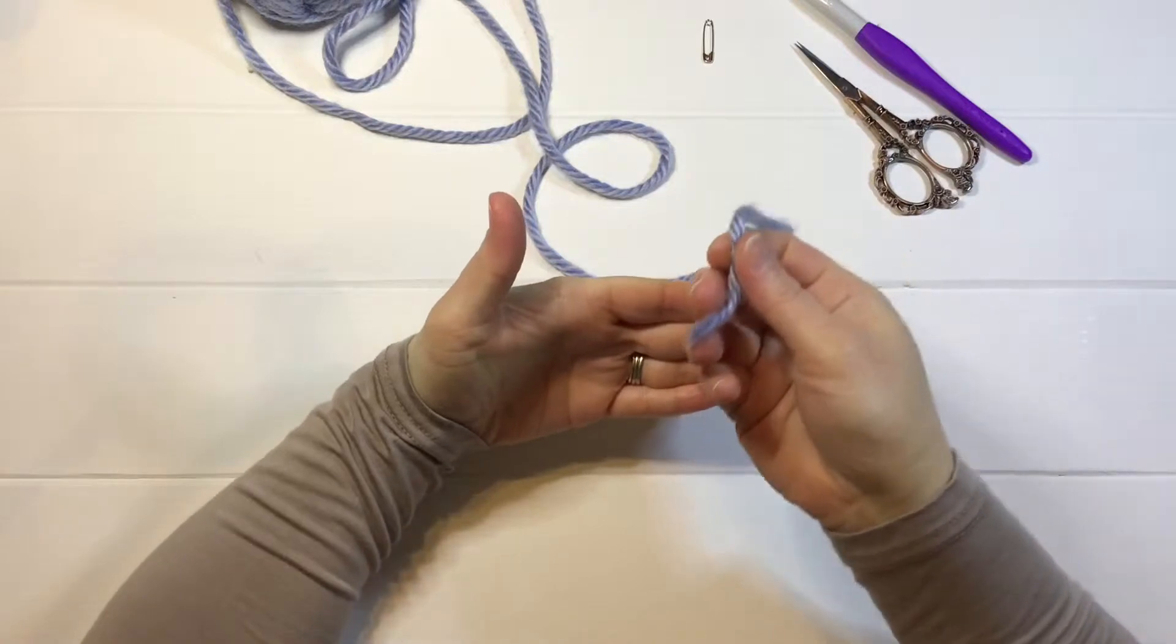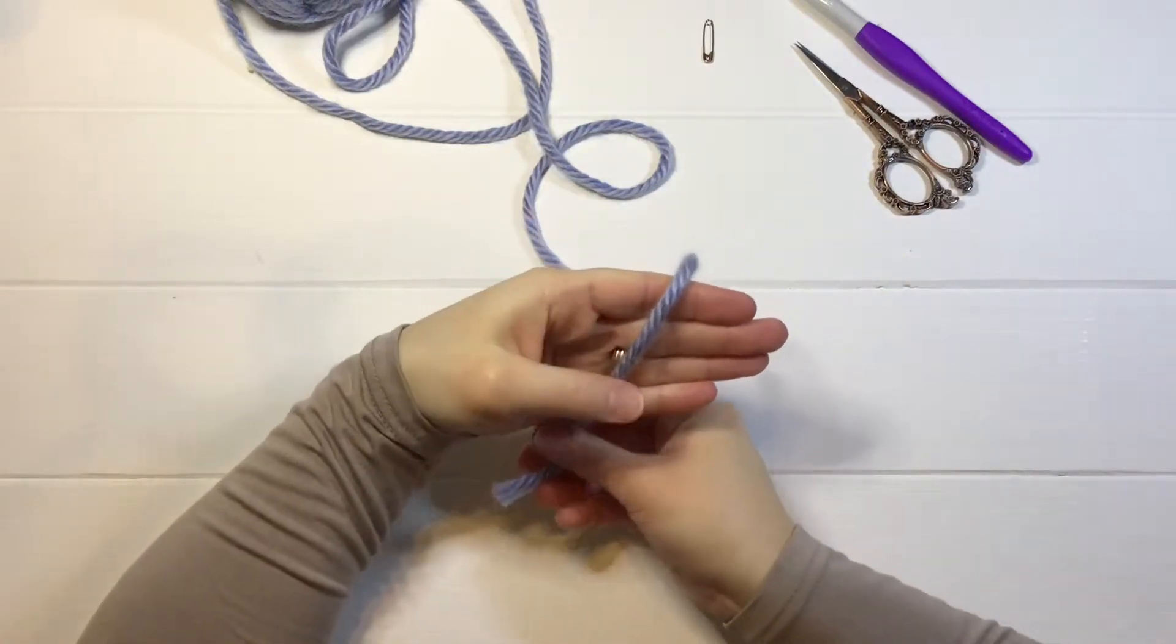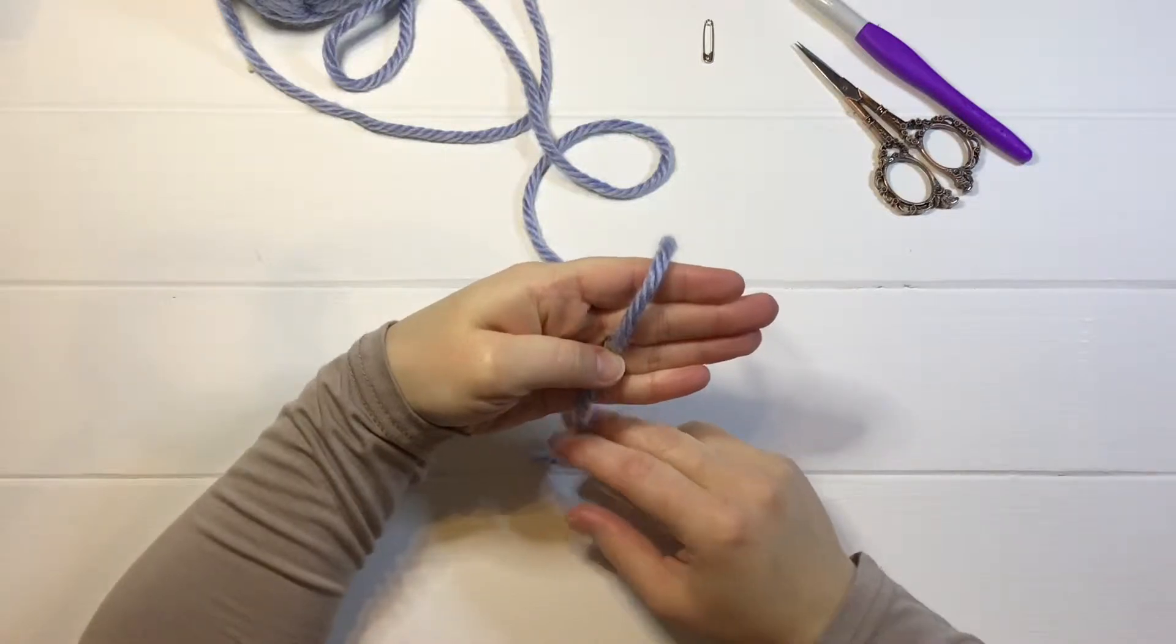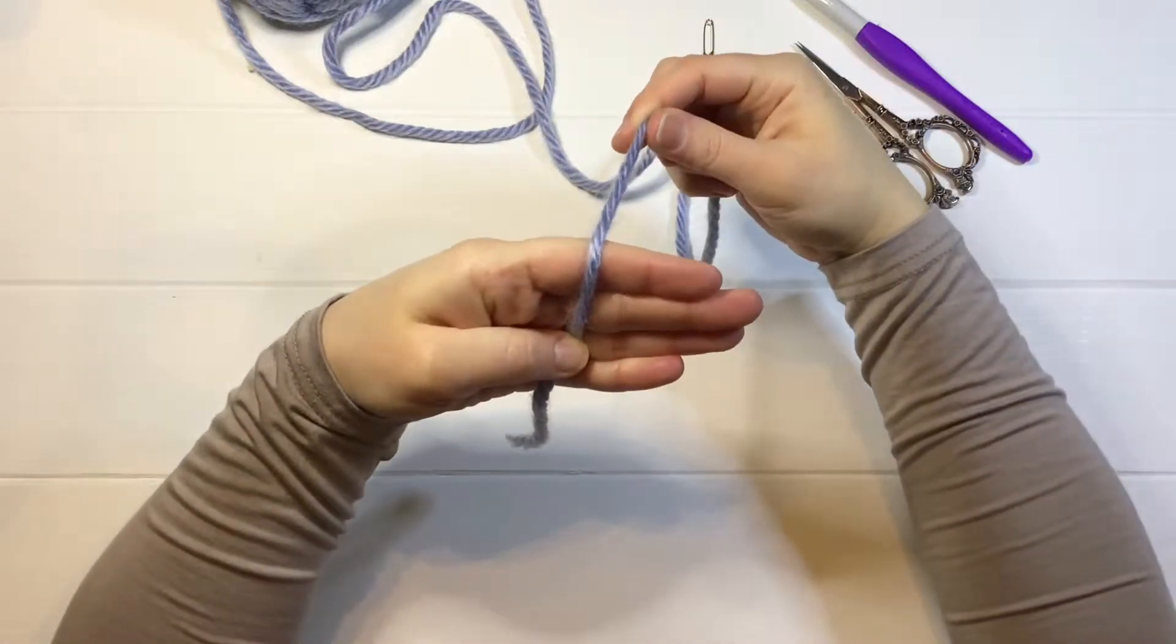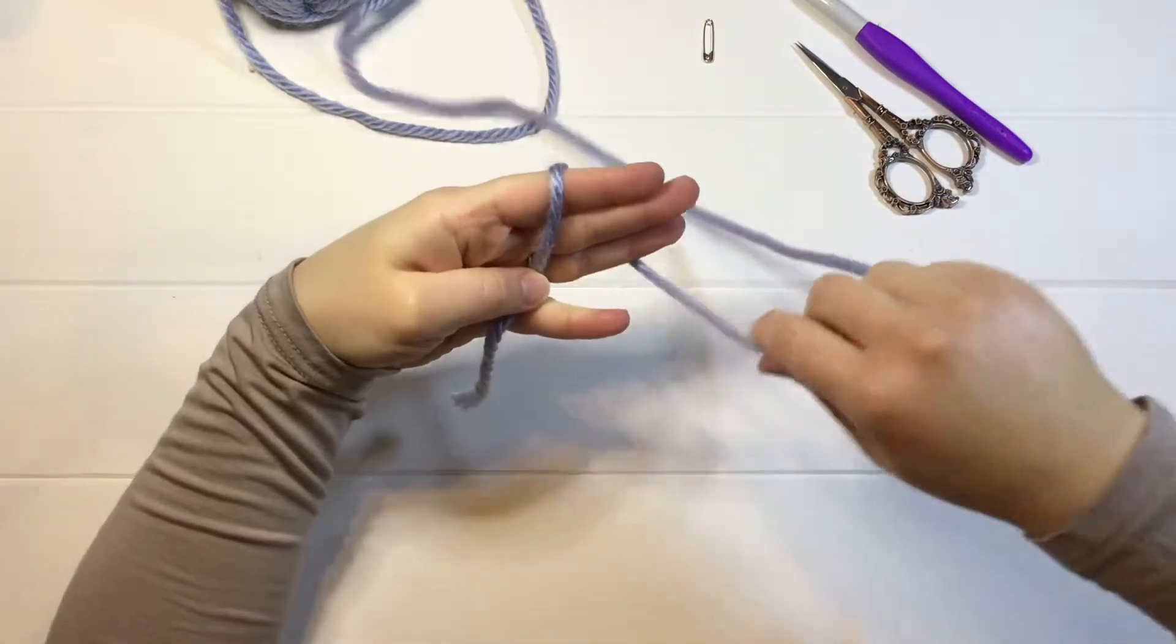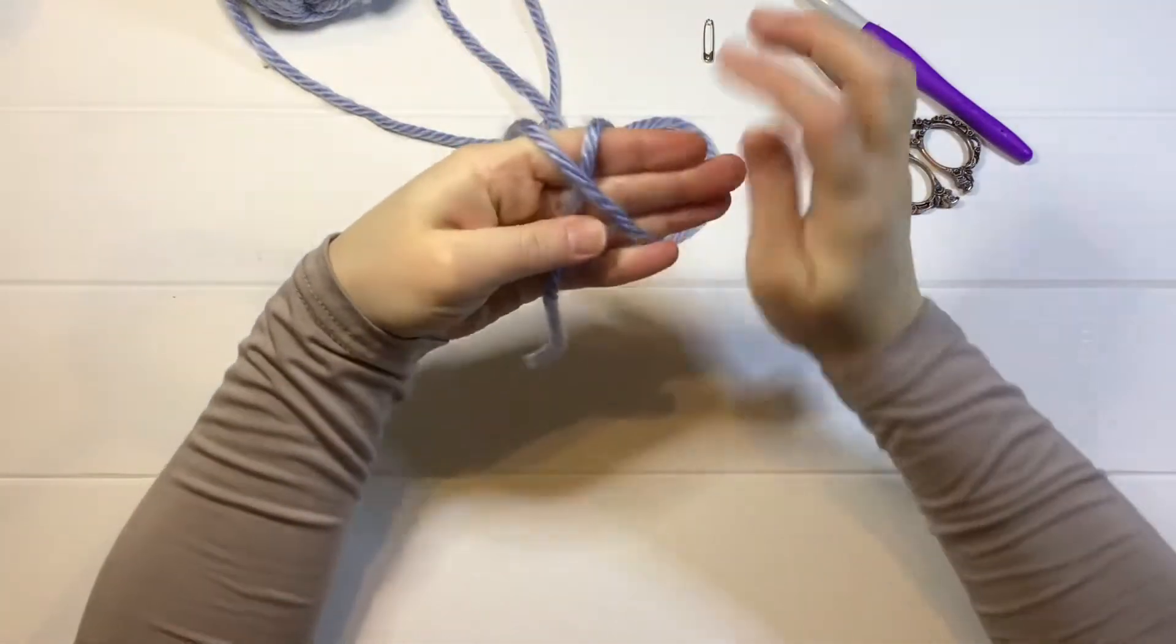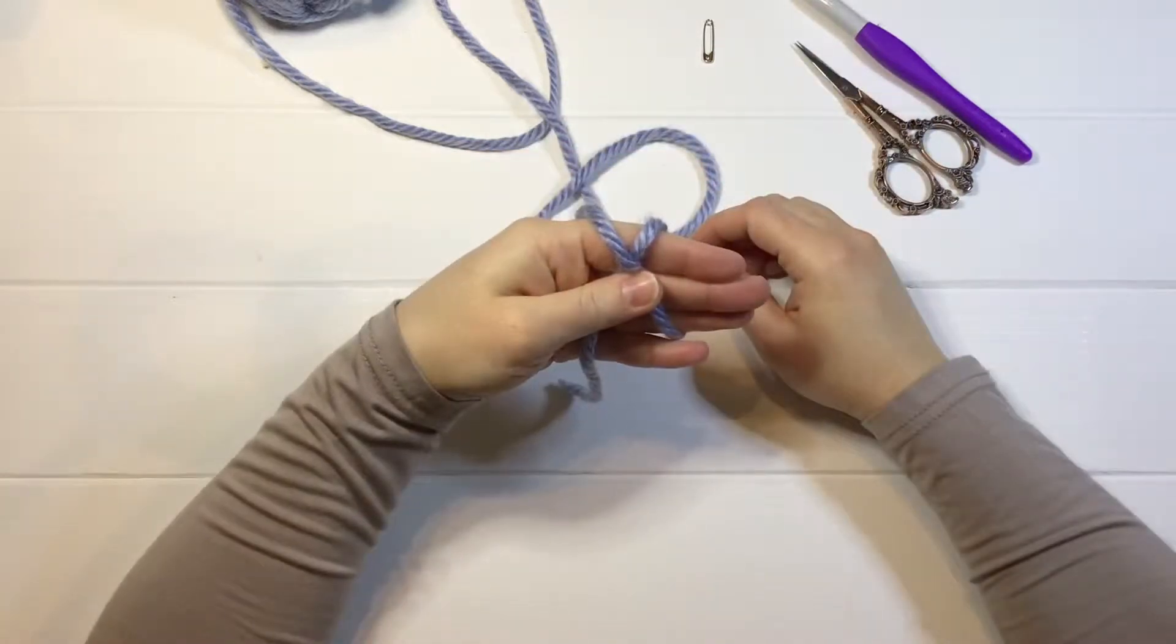Bring the tail of your yarn over your hand, hold that tail in place with your finger, go from the back here, and wrap your yarn around these three fingers, making an X.